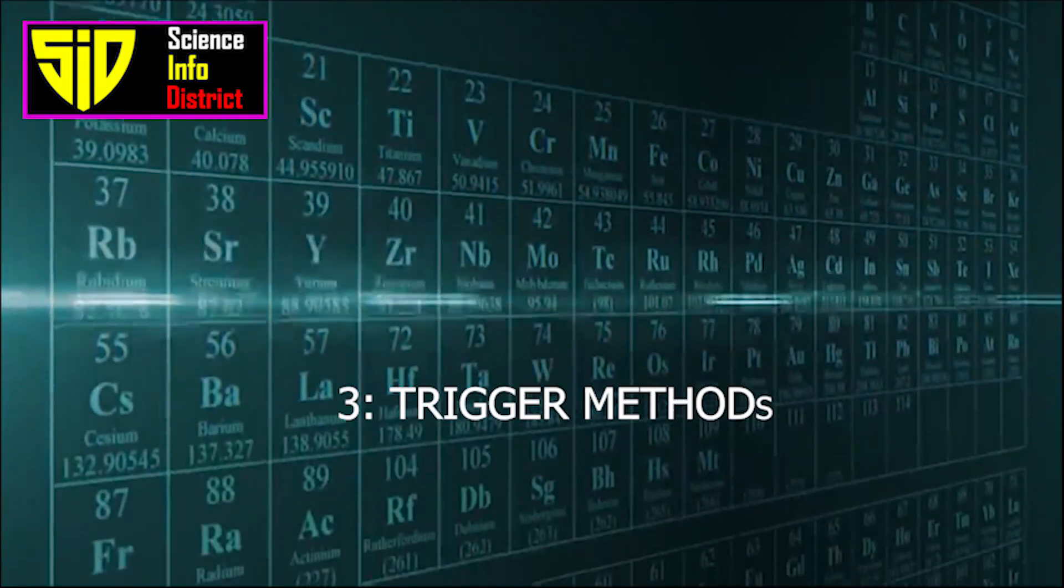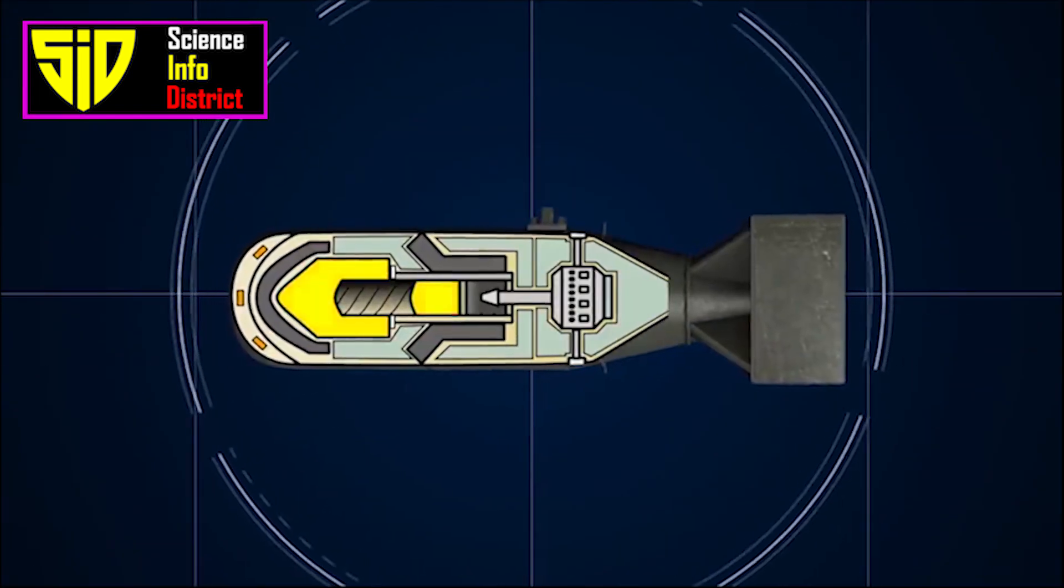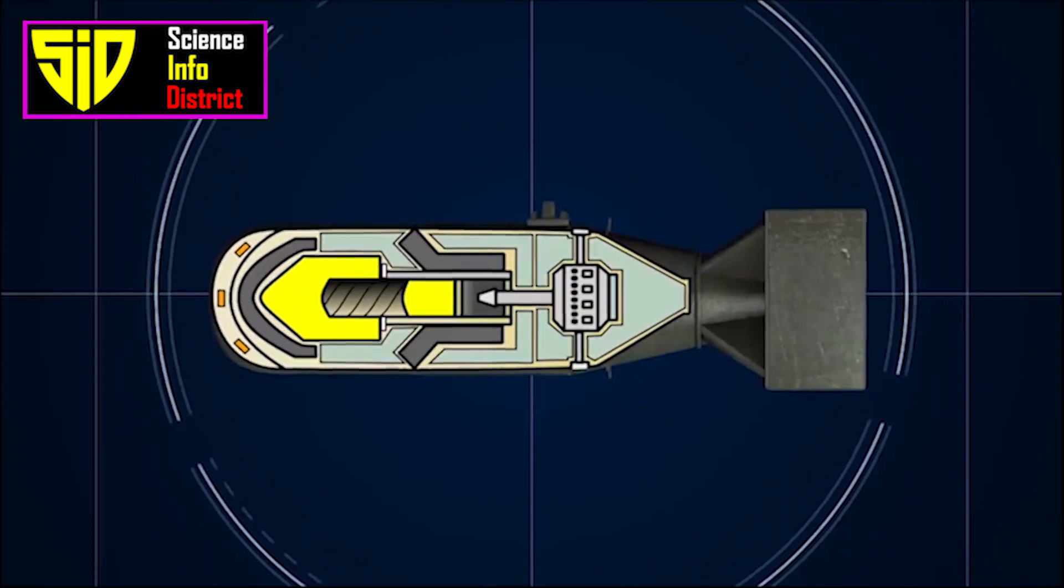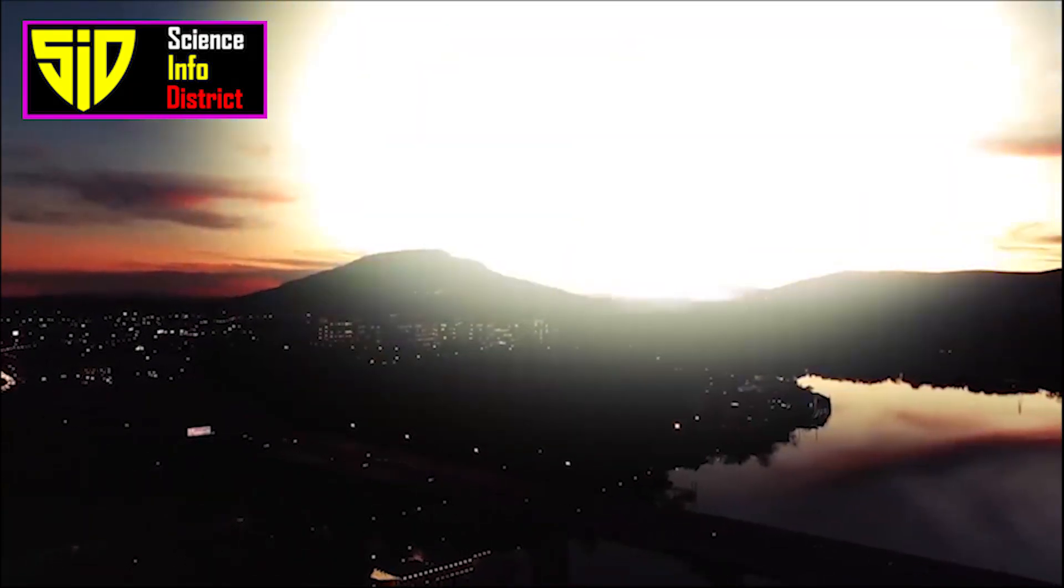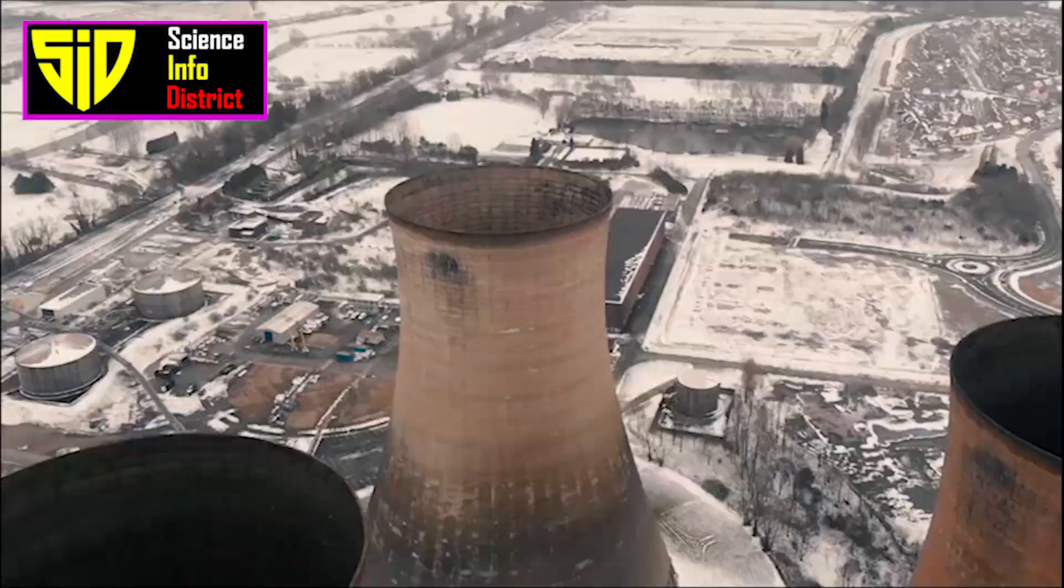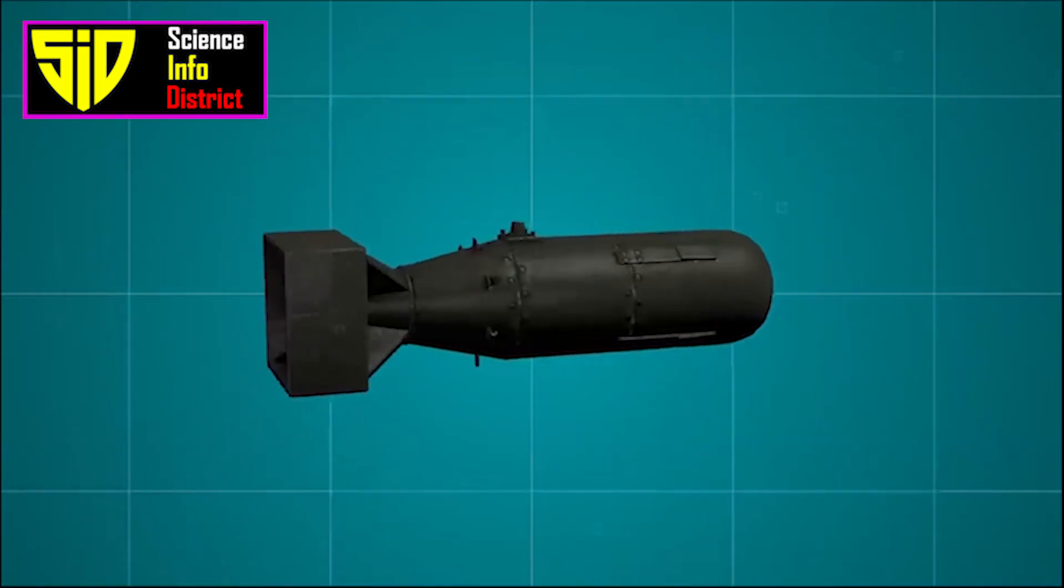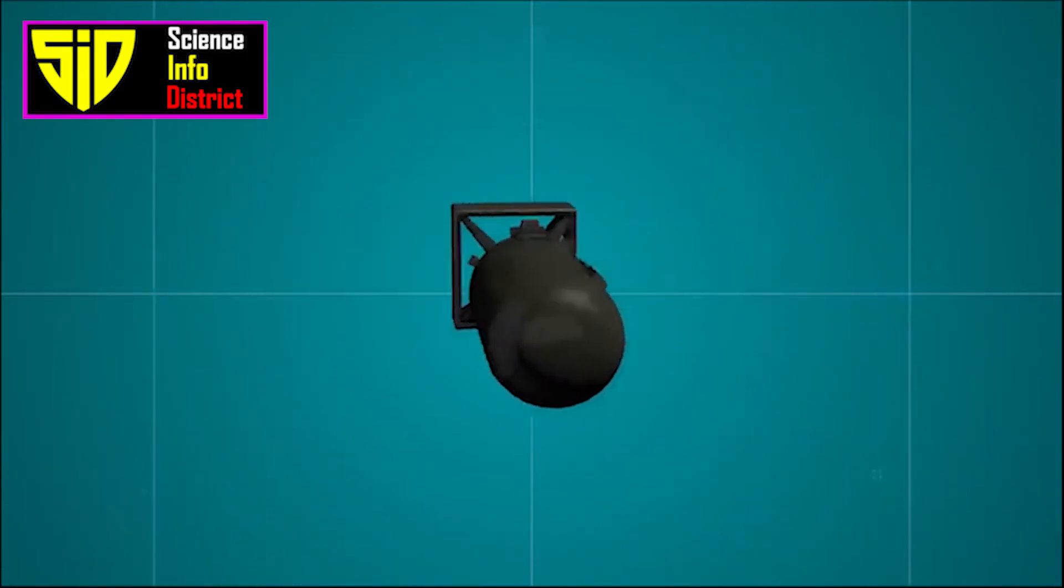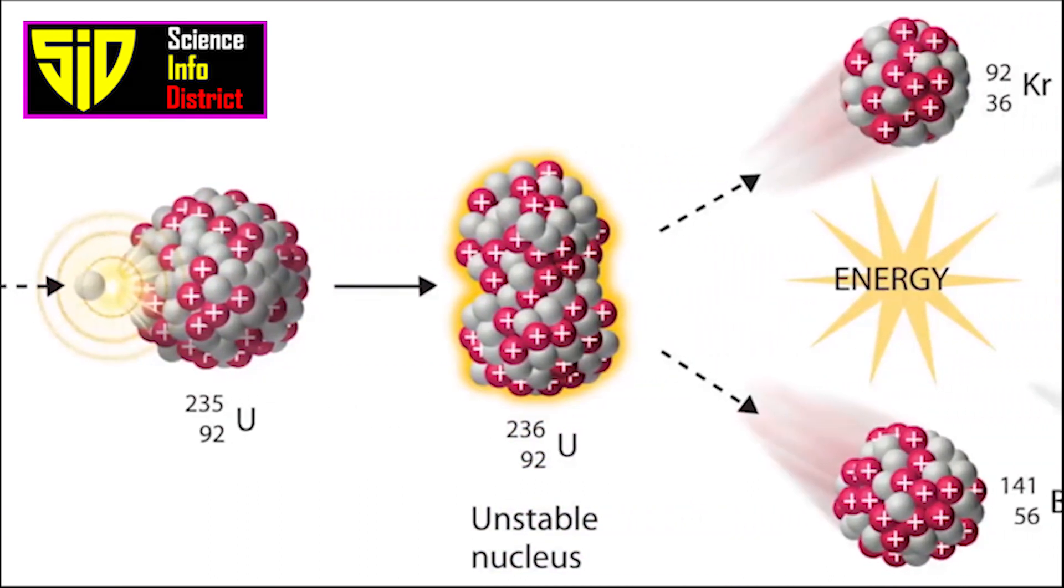Trigger Mechanism: The trigger mechanism is used to initiate the detonation of the conventional explosives. This can be done in various ways, such as through electrical signals, mechanical triggers, or a combination of both. Once the conventional explosives are detonated, they compress the nuclear core, initiating the chain reaction of nuclear fission.